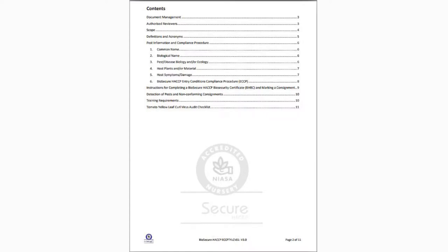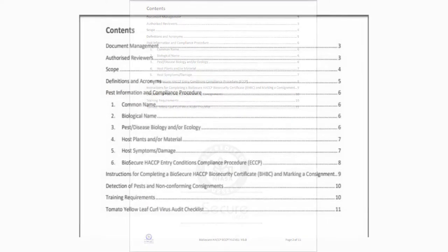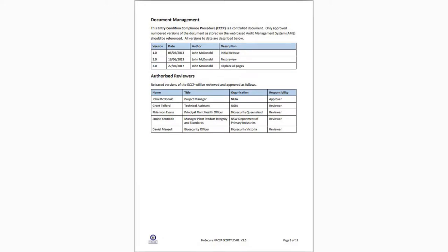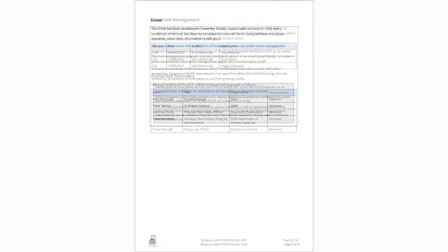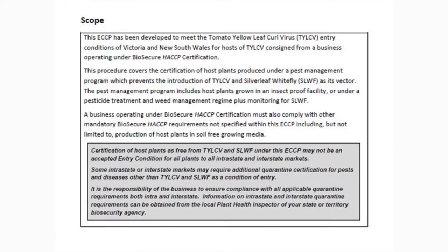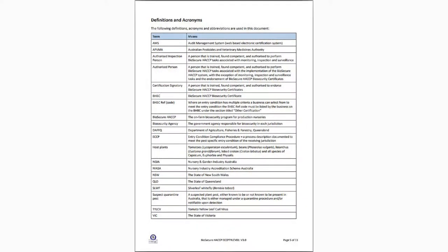An ECCP is divided into several sections. The first section, Document Management, identifies the document's version and the people involved in developing the ECCP. The second section, Scope, outlines the purpose of the ECCP and identifies the pest and jurisdictions the ECCP has been approved for. The third section, Definitions and Acronyms, provides the definition of any acronym or abbreviation used within the document.